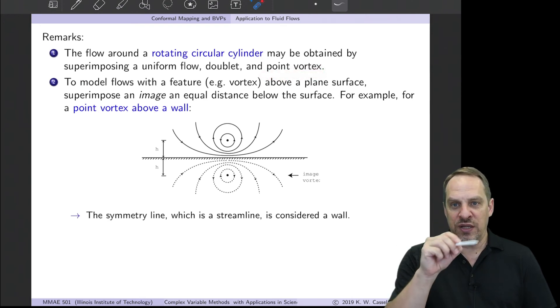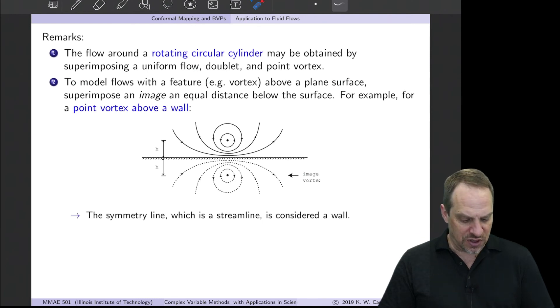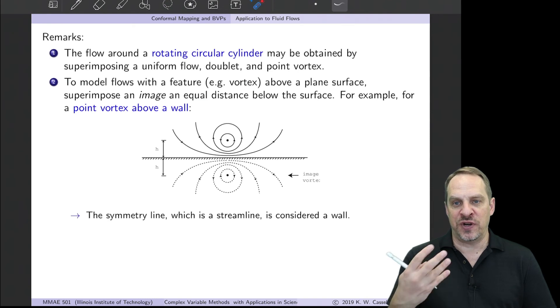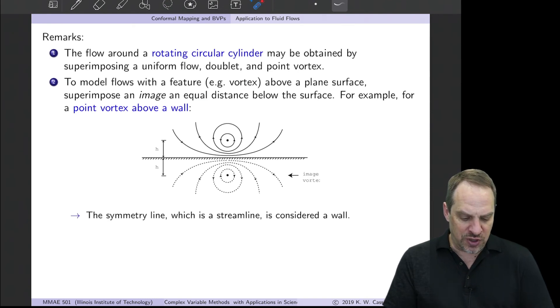A couple remarks here. We could make the cylinder rotate by taking a uniform flow plus a doublet plus a point vortex. That would cause the cylinder to rotate, and we could actually get lift on that rotating cylinder. We can also use images of various features. For example, if we wanted to model a feature such as a vortex above a plane surface.